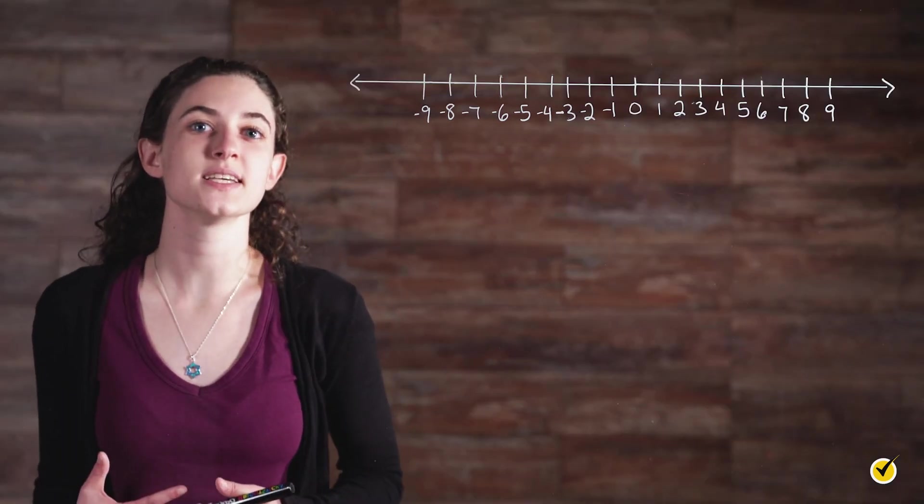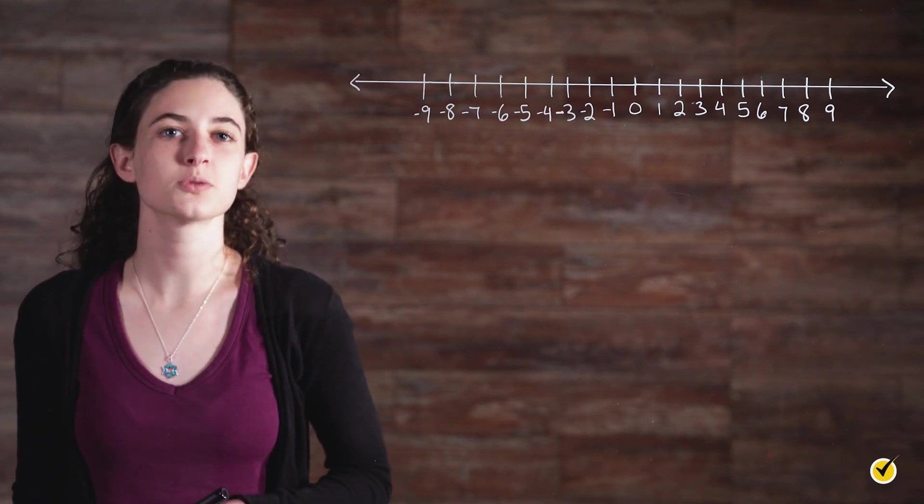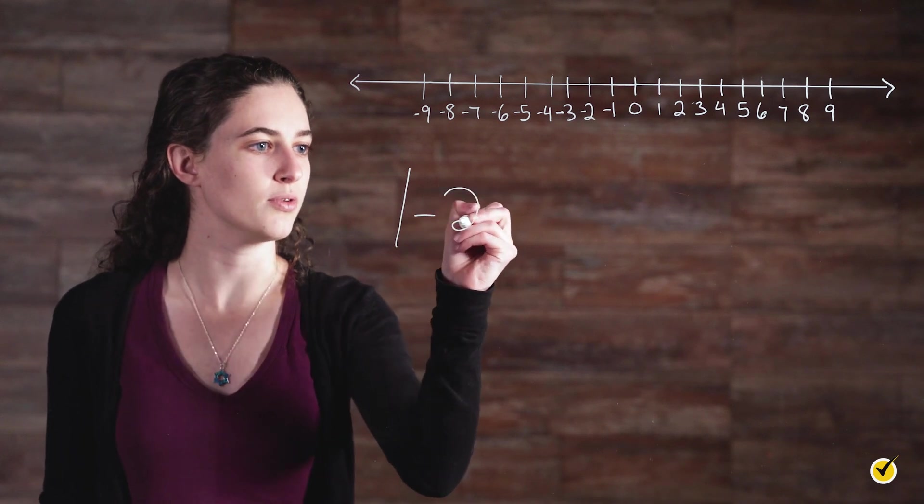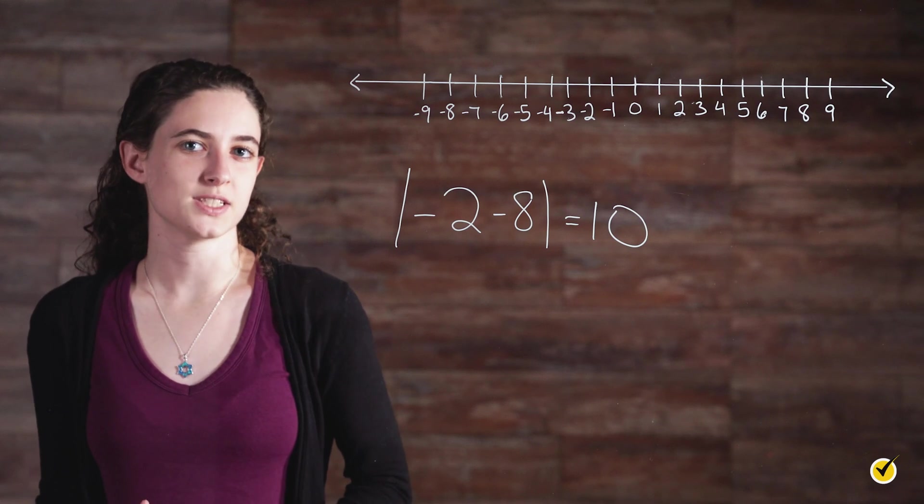On the number line, we can see the distance between negative two and eight is ten. As an expression, we might write this as the absolute value of negative two minus eight equals ten. This is called an absolute difference.